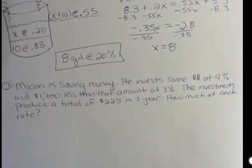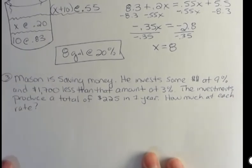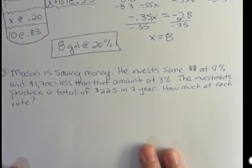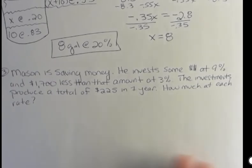And moving right along, here's a money problem for you. Mason is saving money. He invests some dollars at 9% and $1,700 less than that amount at 3%. The investments produce a total of $225 in one year. How much at each rate?